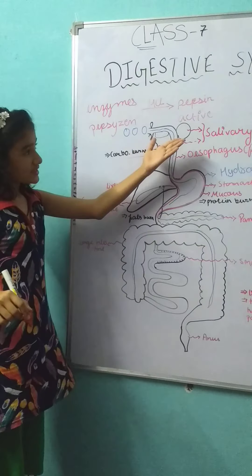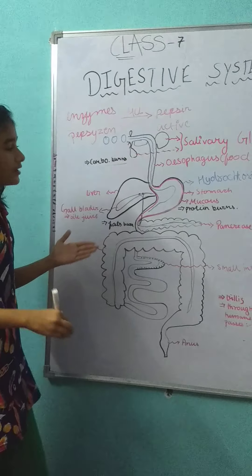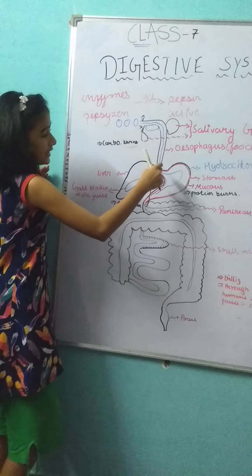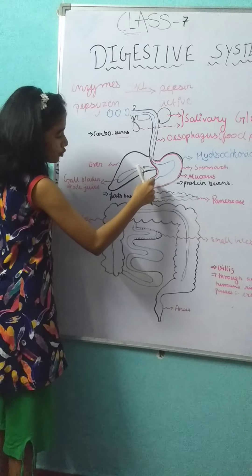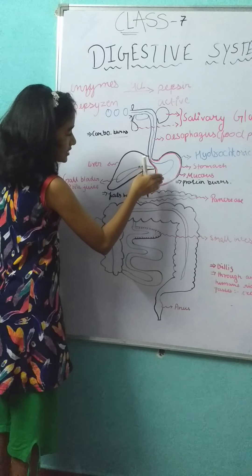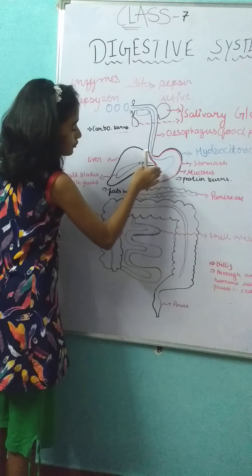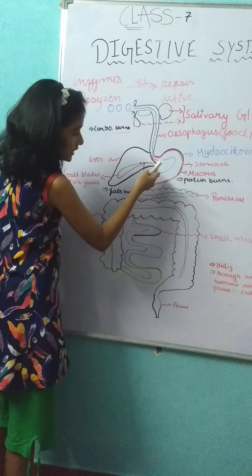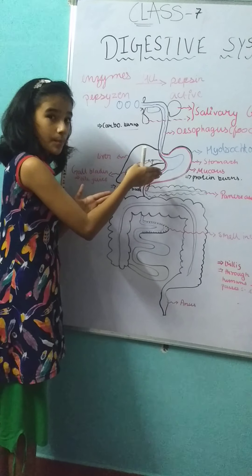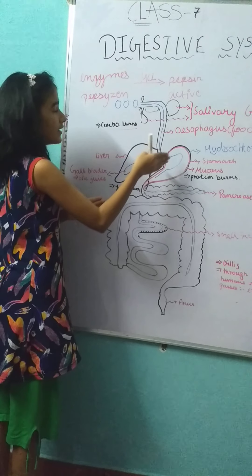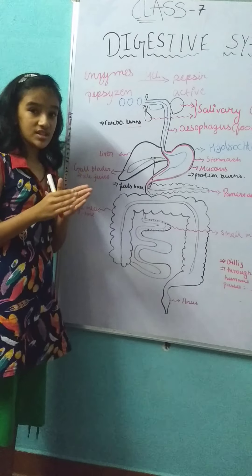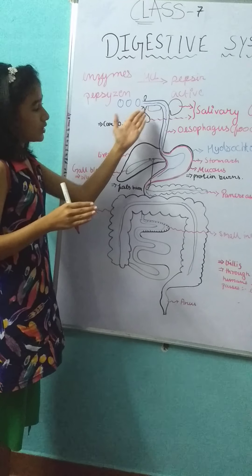It is an active enzyme and now digestion starts. The proteins are digested in the stomach, and the carbohydrates are digested in the mouth.